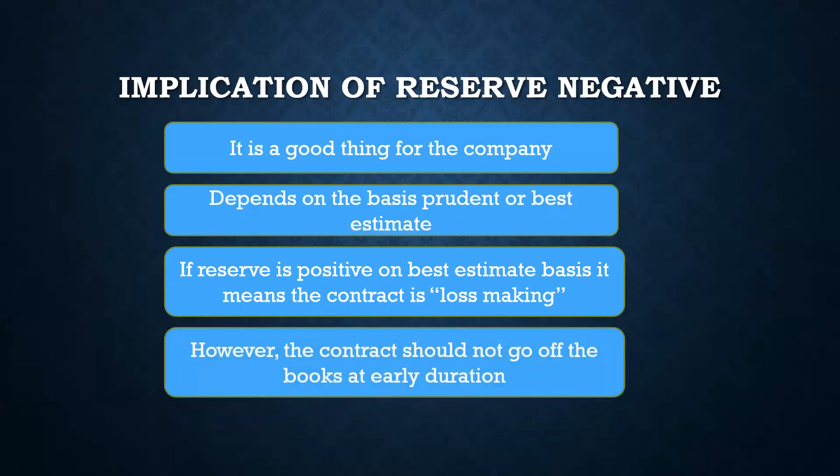However, the problem when reserve is negative is the company should not go off the books. What I mean by going off the books is there should not be any early death, because at that point in time, enough number of premiums has not been accumulated. If there is an early death, then you are losing the asset — you have to pay the death claim, but you are also losing the asset because the negative reserve represents an asset. You have only realized a portion of that asset, not the entire asset. So that's why there should not be early lapse as well, because that would also cause the company to go off the books. That is the implication of a negative reserve.